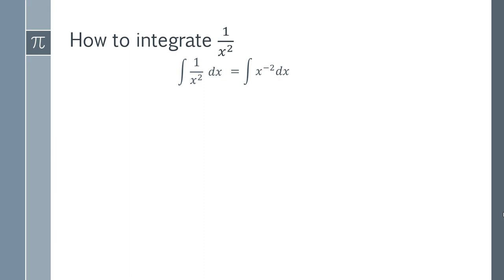When you have a power on the bottom and you want to move it up to the top, you just switch the sign and you make it in this case a minus. So what we're actually doing is the integral of x to the minus 2.